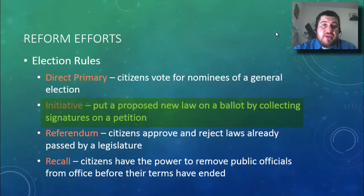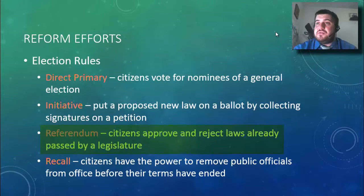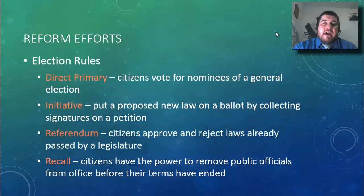An initiative puts a proposed new law on a ballot by collecting signatures on a petition. If you get tens of thousands of signatures, you can propose a new law and people vote on it in the general election. A referendum allows citizens to approve or reject laws already passed by a legislature — citizens go and vote to accept or reject the law.